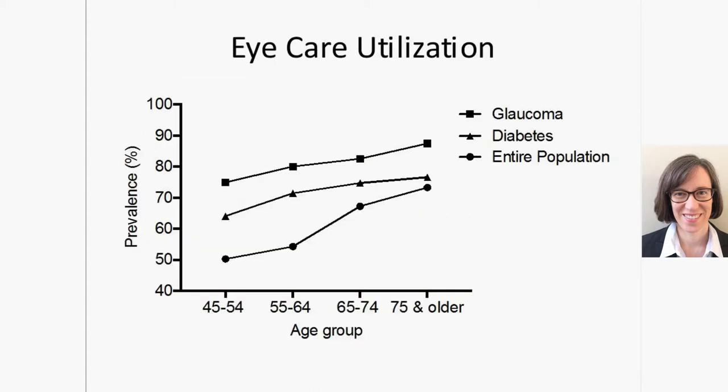We also looked at eye care utilization by certain high-risk groups — people with glaucoma and people with diabetes. The guidelines say these groups should be seen every year by an eye care provider once they're age 60. For the glaucoma group, about 20% aren't being seen every year. For the diabetes group, about 30% weren't seen in the last year. So there's definitely room for improvement there.